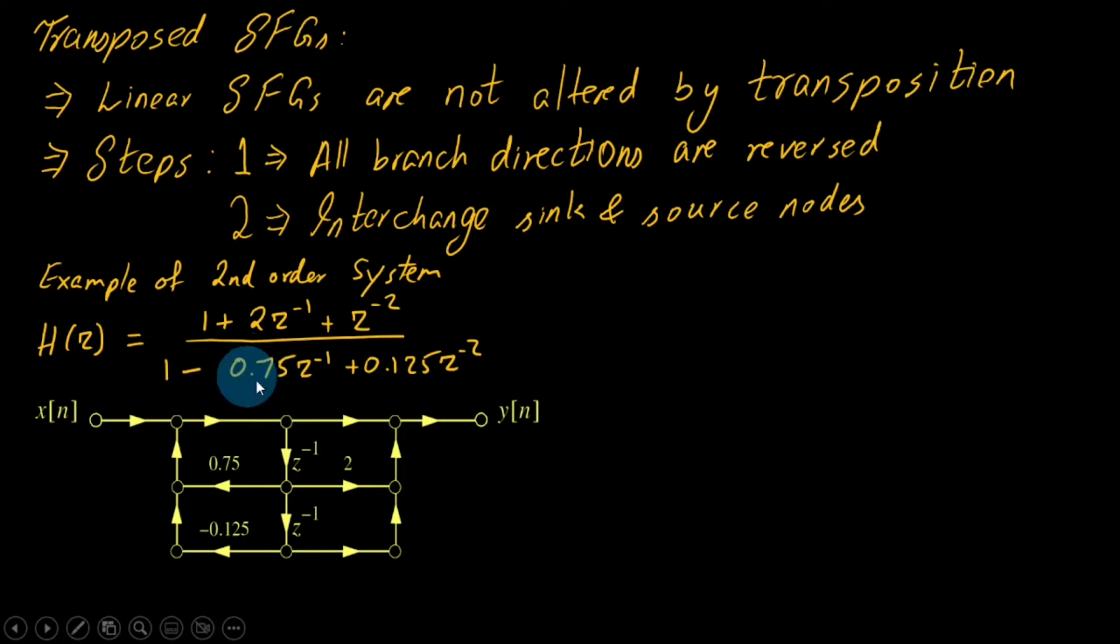They are referred to as coefficients 0.75 and 0.125. The sign is reversed—there's a minus here—so we have +0.75 and -0.125. This is a standard Type 2 form.